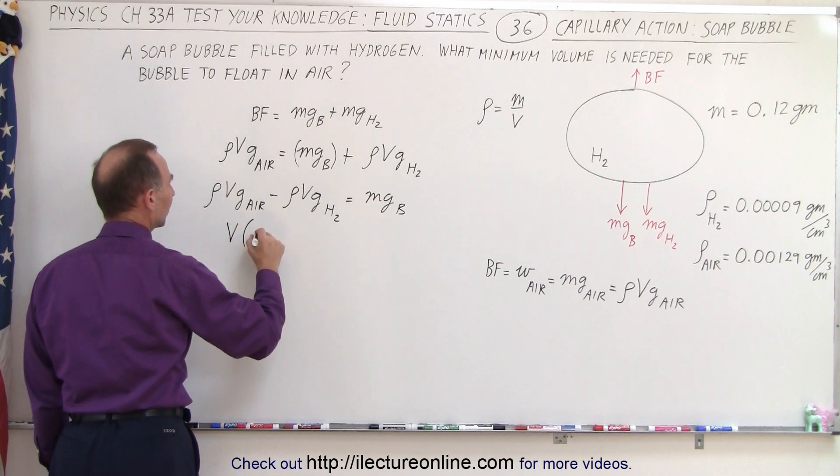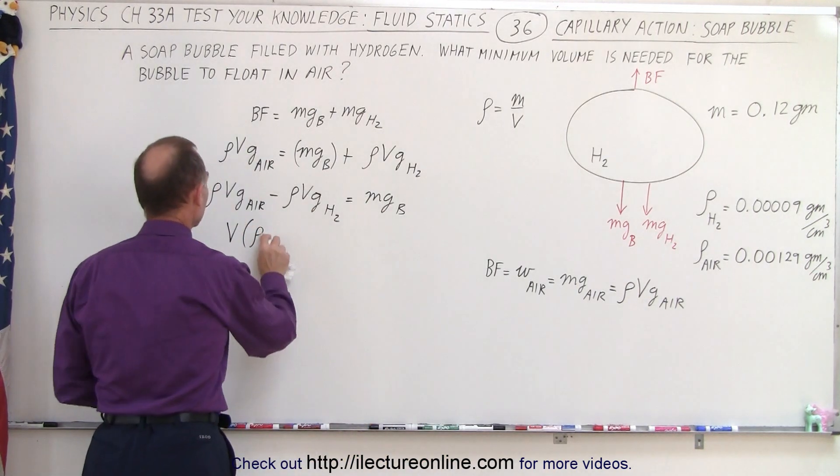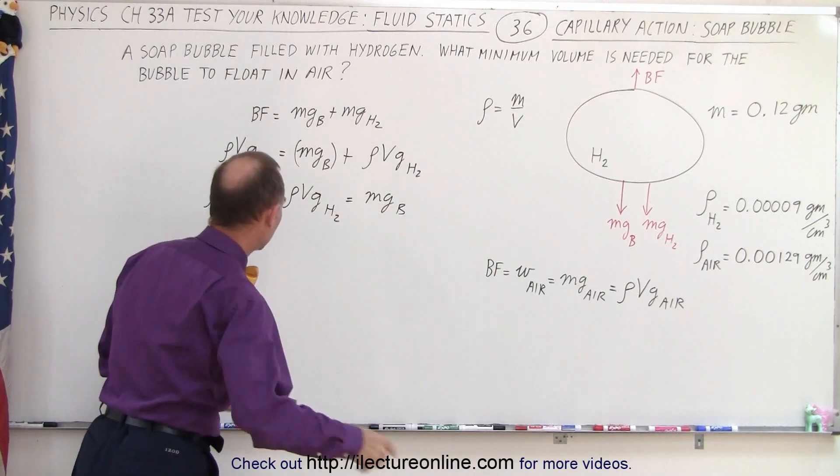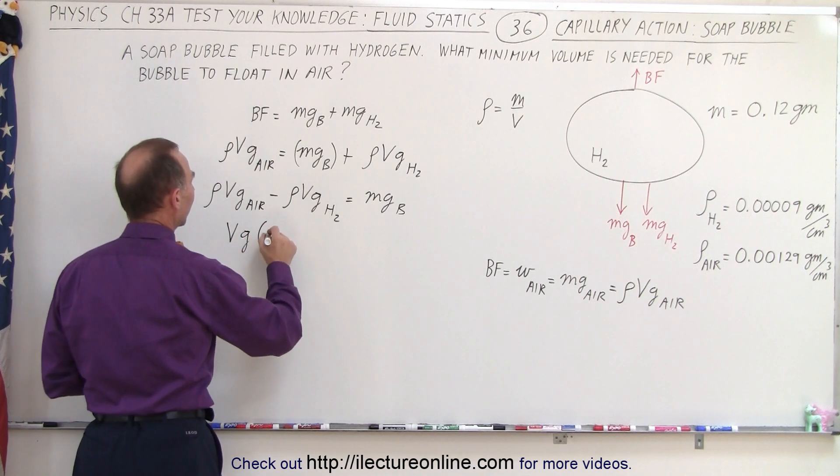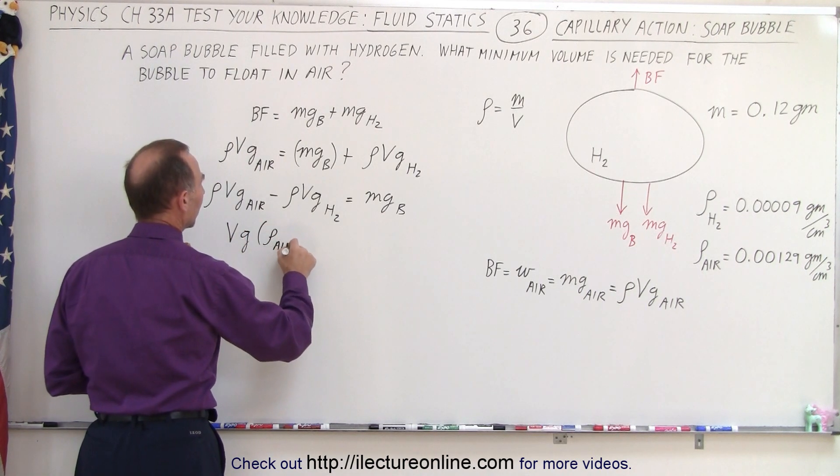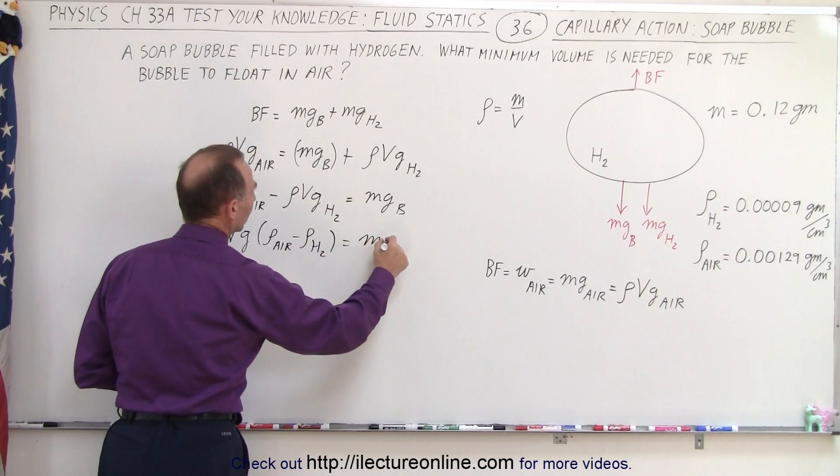Well actually, it probably would be cleaner if we also factor out the g, because that's the same for both. Times the density of air minus the density of the hydrogen equals the weight of the bubble.